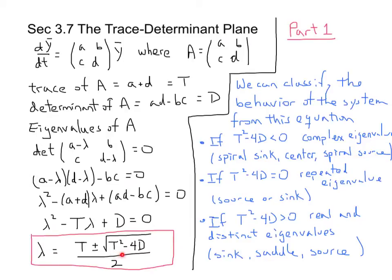If, on the other hand, the argument is positive, if T²-4D is bigger than 0, we're going to have real and distinct eigenvalues. And we know that our system, when we look at its behavior in its phase portrait, will either be a sink, a saddle, or a source.